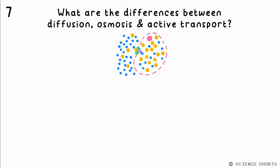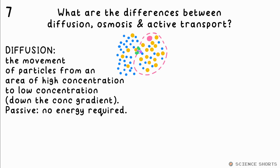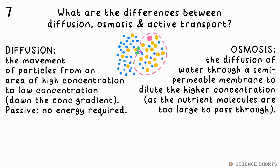What are the differences between diffusion, osmosis and active transport? Diffusion is the movement of particles from an area of high concentration to an area of low concentration — down the concentration gradient. This is passive and doesn't require energy. Osmosis is the diffusion of water through a semi-permeable membrane to balance the concentration of solutions on either side, for example sugar concentration in a cell. The water moves because the sugar is too large to fit through the holes in the membrane, and it always moves into the higher concentration solution to dilute and balance it. This is how water enters root hair cells in a plant.